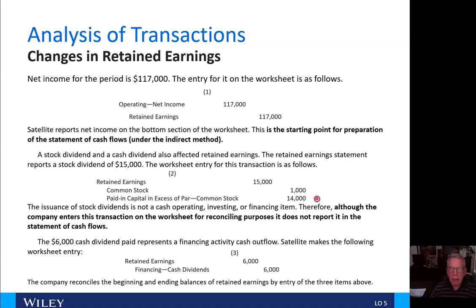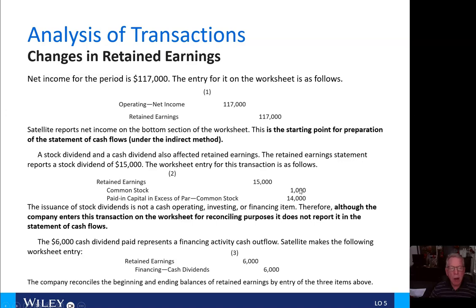A stock dividend and cash dividend also affected retained earnings. The retained earnings statement reports a stock dividend of $15,000. The worksheet entry is a debit to retained earnings, affecting common stock for $1,000 and paid-in capital in excess of par for the remaining $14,000. The issuance of stock dividends is not a cash operating, investing, or financing item; therefore, although the company enters this transaction on the worksheet for reconciling purposes, it does not report it in the statement of cash flows. The $6,000 cash dividend paid represents a financing activity — cash outflow. Satellite debits retained earnings for $6,000 and credits financing cash dividends for $6,000.